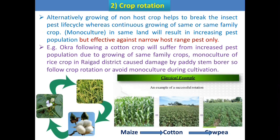The next technique is crop rotation. The name indicates alternating the crop — alternate growing of a non-host crop. Alternate growing of a non-host crop helps to break the insect or pest life cycle, whereas continuous growing of the same crop or same family crop (monoculture) on the same land increases the pest population.